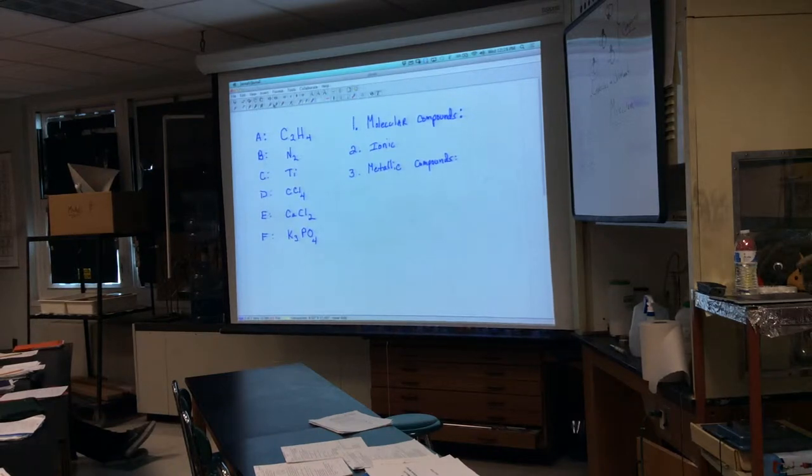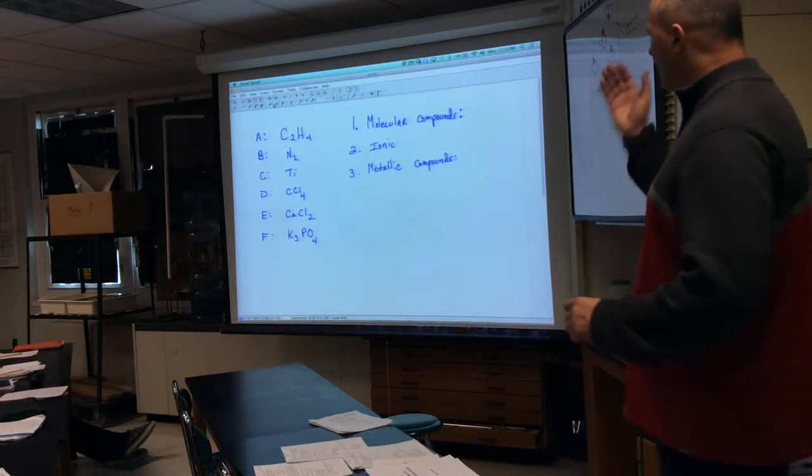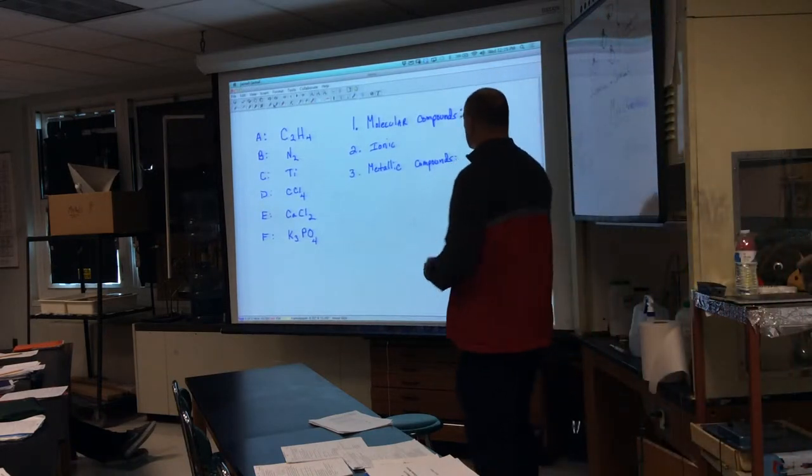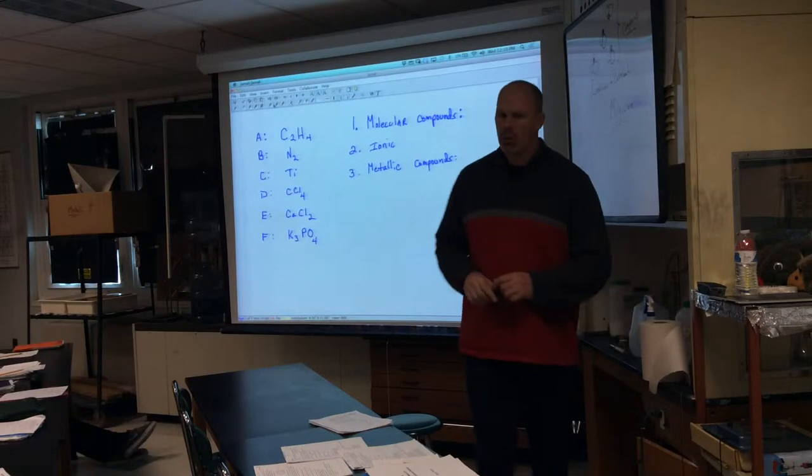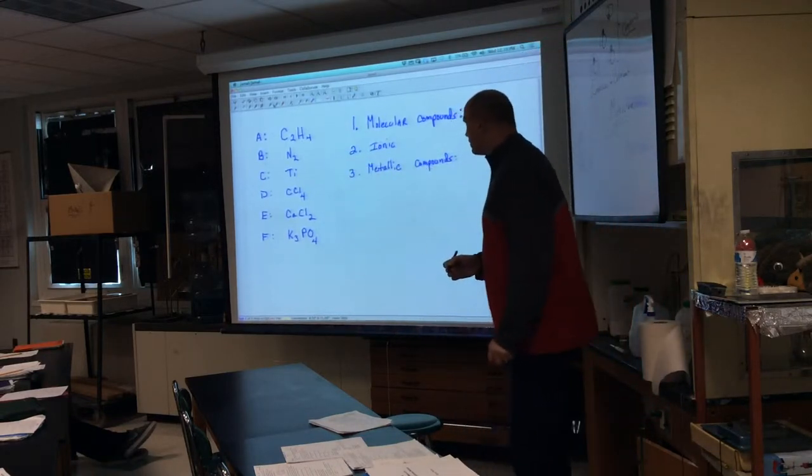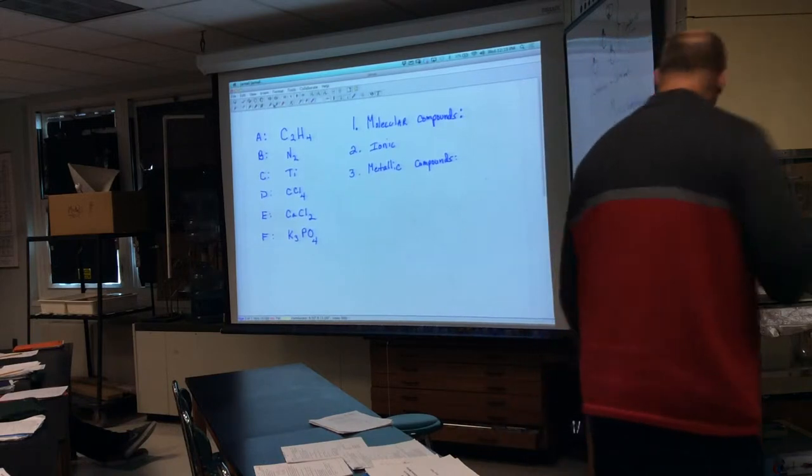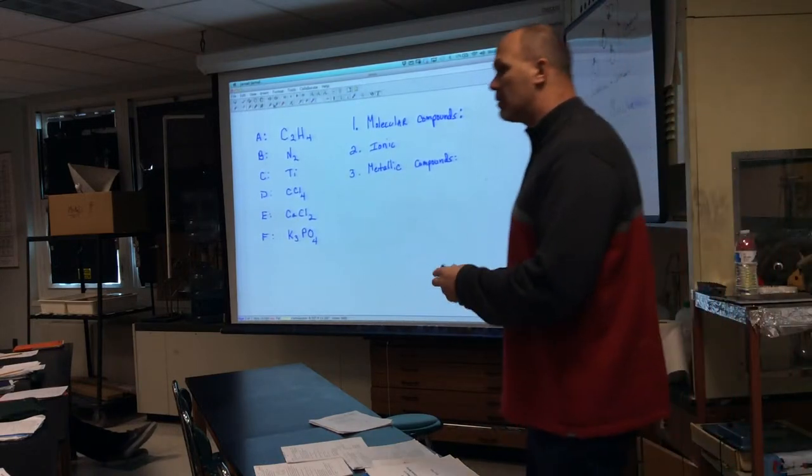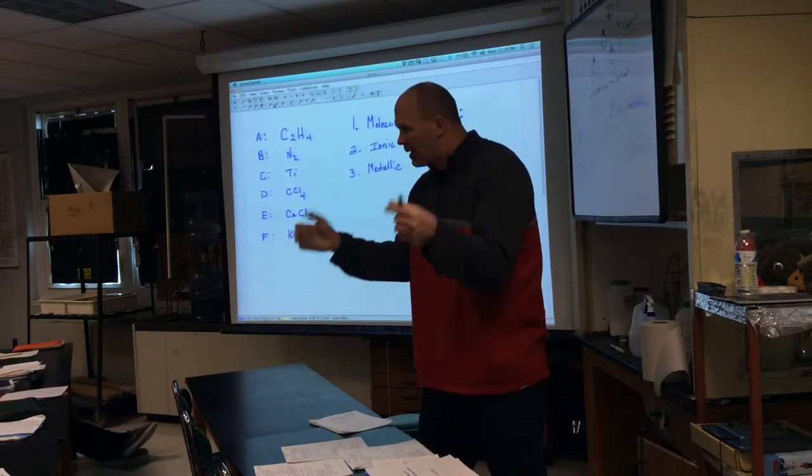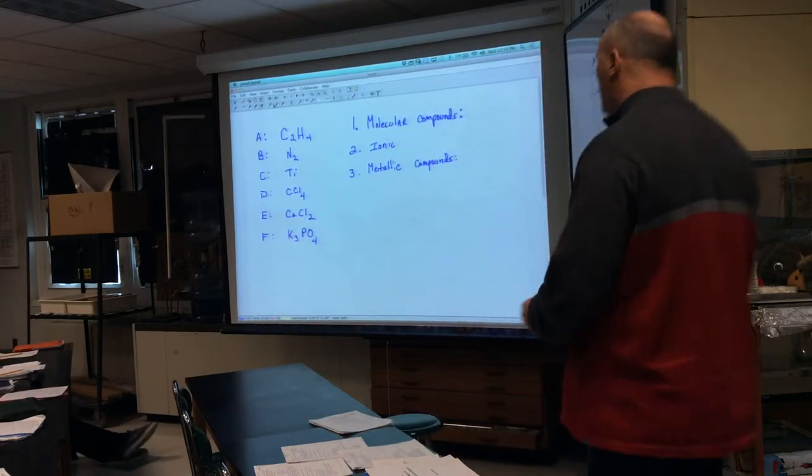So when we look at these list of compounds, I want to first break them up into who are molecular compounds, who's ionic and metallic. So what is molecular? It's non-metals bonded to non-metals. Right, it's covalent bonds. Covalent compounds have bonds in exact positions. They're going to make exact particles, they're going to make molecules.